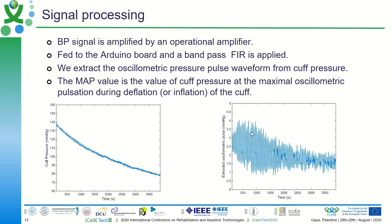From the MAP, we can also extract the systolic and diastolic blood pressure by finding the points at 0.6 and 0.8 of the MAP amplitude value, reflected on the cuff pressure curve. So the MAP at this point is equivalent to some corresponding point on the curve, and the systolic and diastolic are at 0.6 and 0.8 of this value reflected on this curve.